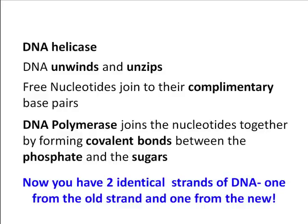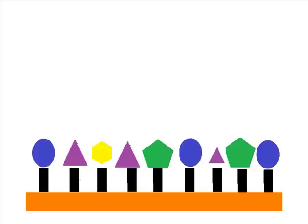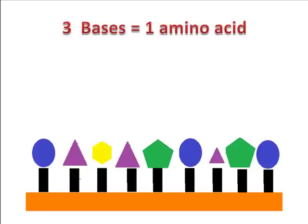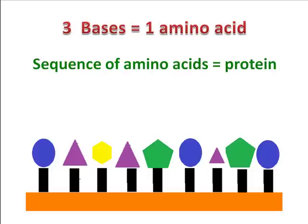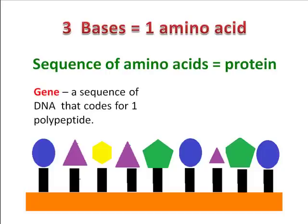What is DNA used for anyway? DNA is used to make proteins. Three bases, or a triplet of bases, codes for one amino acid, and the sequence of amino acids codes for a protein to be made on the ribosome. A gene is a sequence of nucleotides that codes for one polypeptide, or a chain of amino acids.